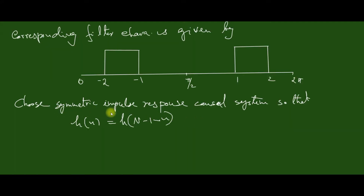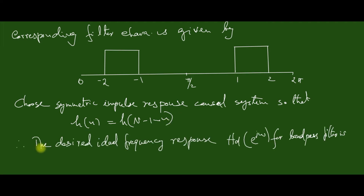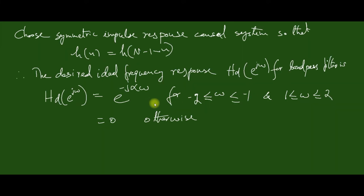Now choose a symmetric impulse response for the causal system, so that h(n) equals h(N−1−n). Therefore the desired ideal frequency response Hd(e^jω) for the bandpass filter equals e^(−jαω) for omega varying from −2 to −1 and 1 to 2, and equals 0 otherwise.